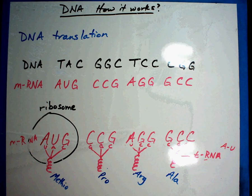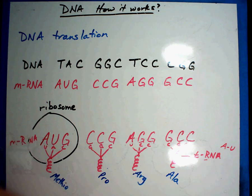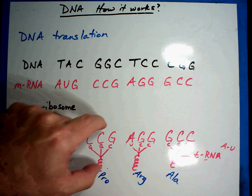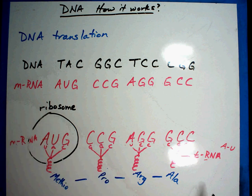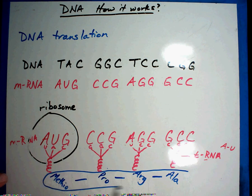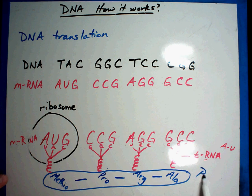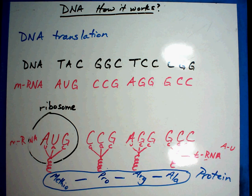And so what happens is when you slide it through the ribosome very quickly, we're doing it very slow, but very quickly it's going to read in groups of three. And when it reads, methionine hooks onto this and hooks onto this and hooks onto proline and arginine and alanine. And when it gets to the very end, it stops making it. And this group right here in blue is the protein. And the protein tells the cell exactly what it wants it to do.